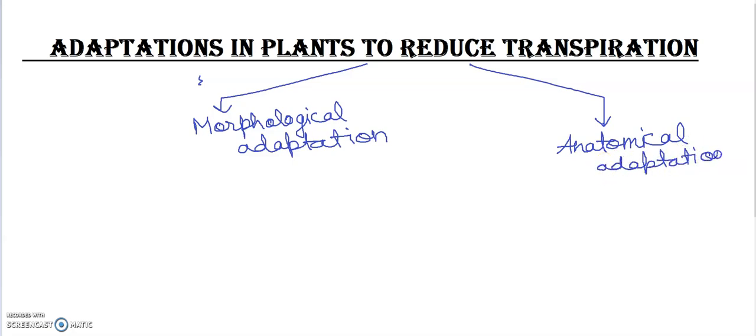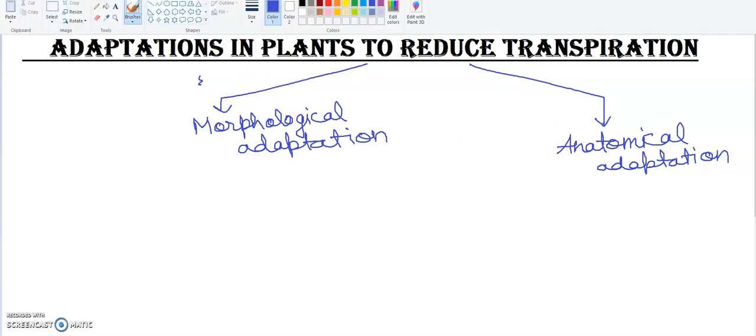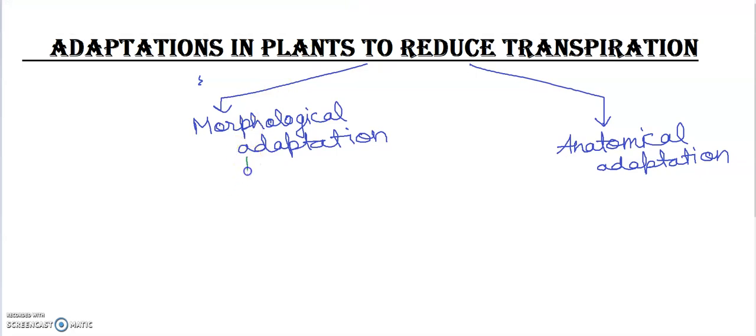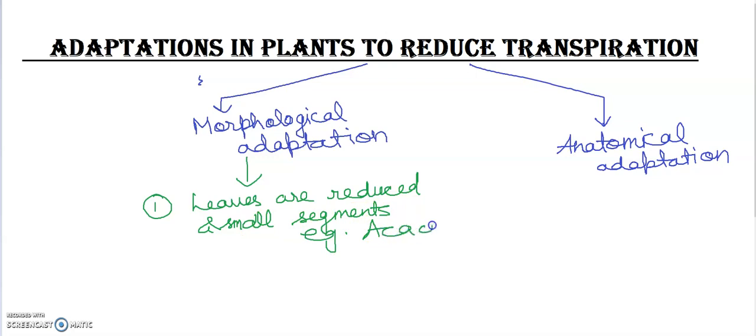In morphological adaptations, plants have leaves that are reduced and divided into small segments. For example in acacia and prosopis.